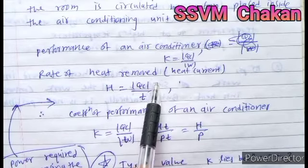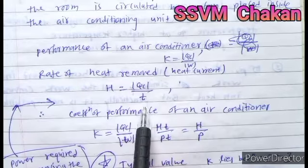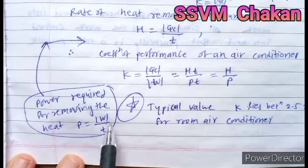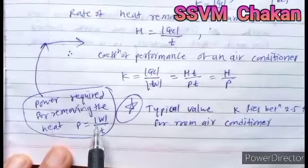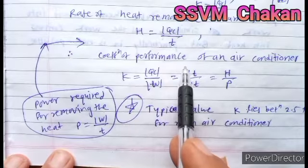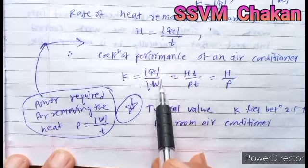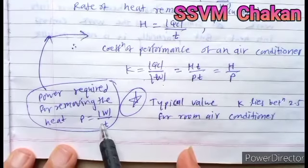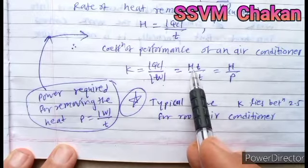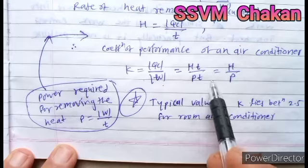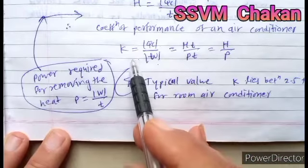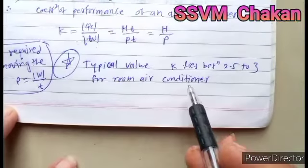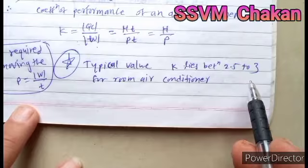The rate of heat removed H equals Q_C divided by T. The power required to remove the heat P equals W divided by T. Substituting the values of Q_C and W into the COP formula, we get K equals H·T divided by P·T; the T cancels, so K equals H divided by P, giving the coefficient of performance of the air conditioner. The typical value of K for an AC lies between 2.5 to 3.